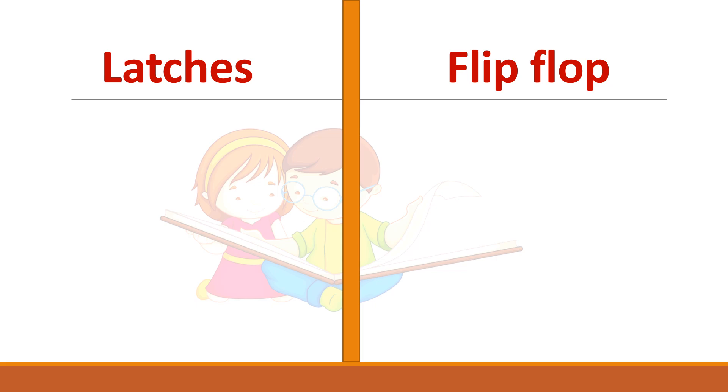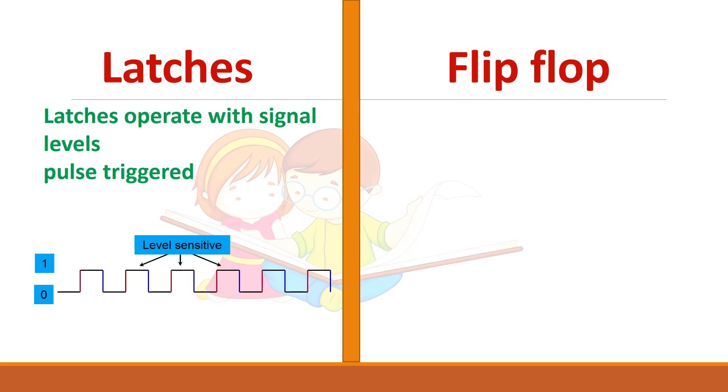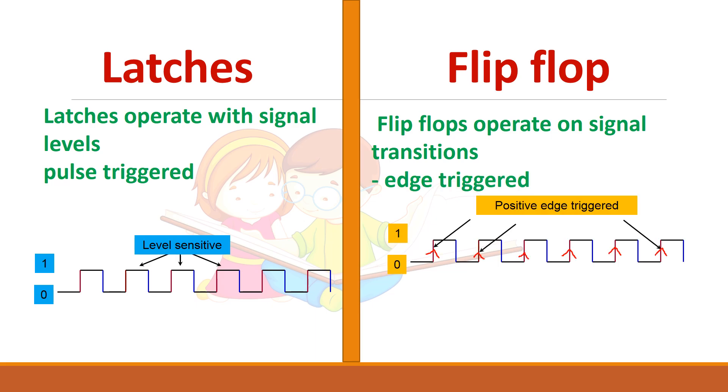Let us see the difference between latches and flip-flop. The latches always operate with signal level. So they are said to be pulse-triggered. So they are level-sensitive. Flip-flops, whereas, operate on signal transitions. That is, it is said to be edge-triggered. So it can be positive edge-triggered or negative edge-triggered flip-flop.